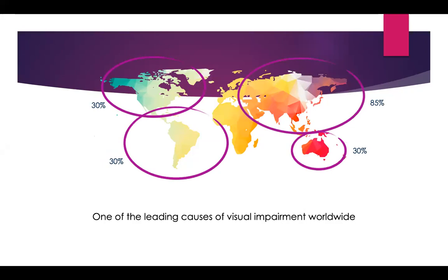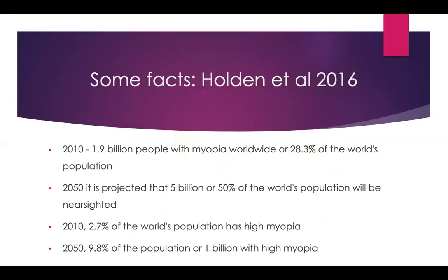Myopia is one of the leading causes of visual impairment worldwide, so our job as eye care practitioners is to prevent the destruction of eye health from myopia. According to Holden and colleagues in 2016, there were 1.9 billion people with myopia worldwide, or 28.3% of the world's population. By 2050, it's projected that about 5 billion, or 50% of the world's population, will be myopic. In 2010, 2.7% had high myopia, and by 2050 we're looking at 9.8% or 1 billion people with high myopia.